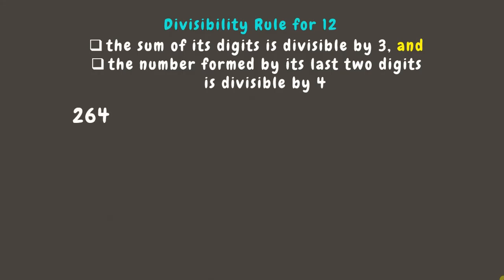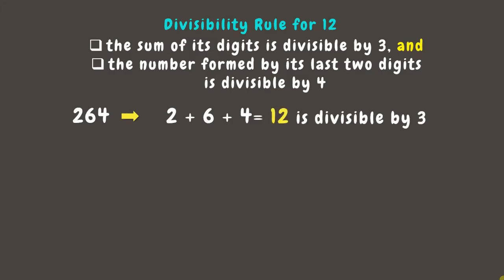Let's take the number 264 as an example. First, let's check if the sum of its digits is divisible by 3. Let's add! 2 plus 6 plus 4 is 12, which is divisible by 3.